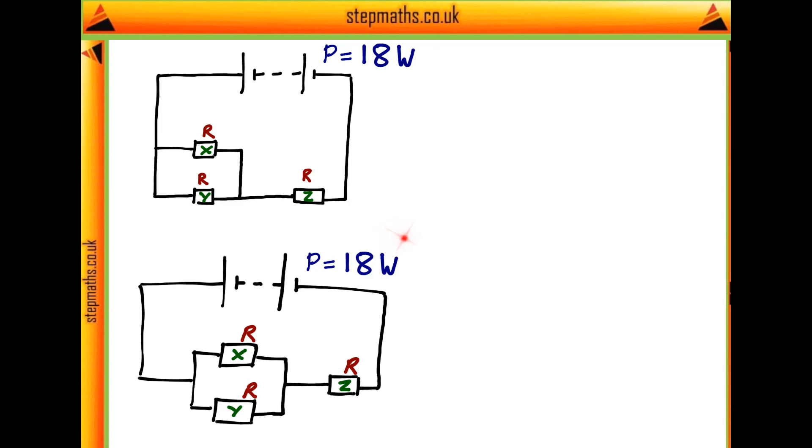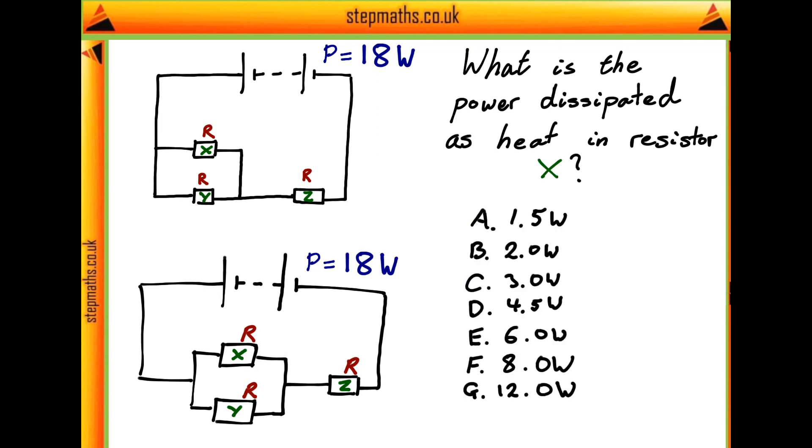After we've redrawn the circuit, we can read the actual question, which asks us, what is the power dissipated as heat in resistor X, that is, the resistor over in the parallel combination? And then the question gives us a range of solutions.